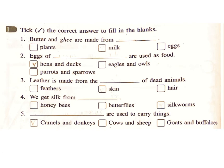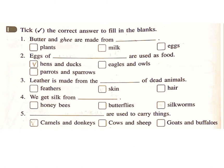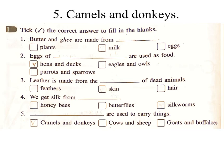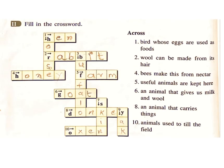Four: We get silk from — honeybees, butterflies, silkworms. Answer: Silkworms. Five: Which animals are used to carry things — camels and donkeys, cows and sheep, goats and buffaloes? Answer: Camels and donkeys.